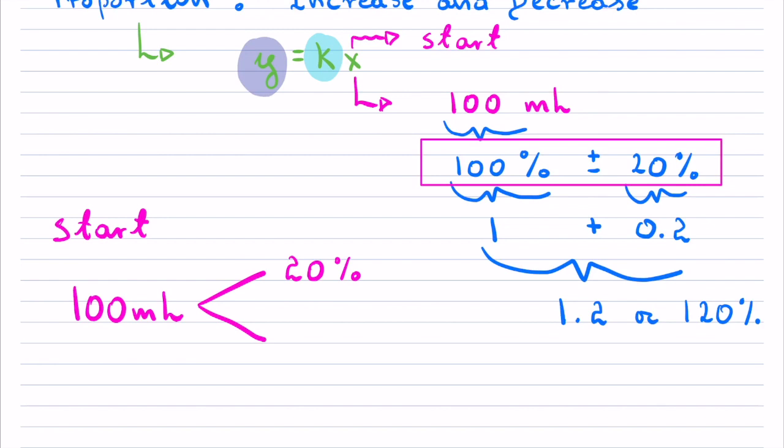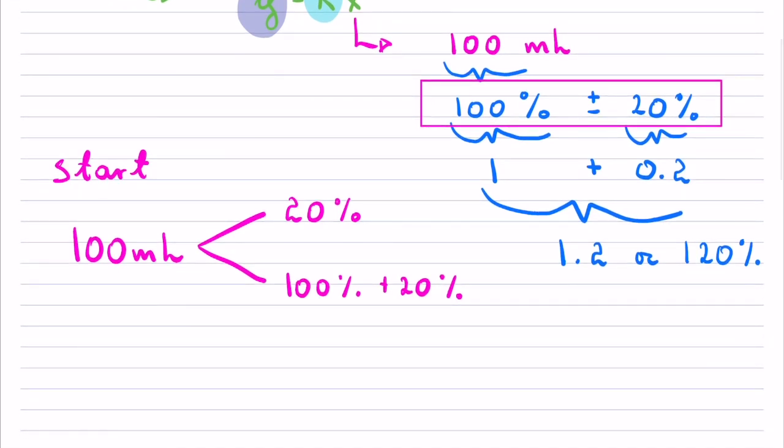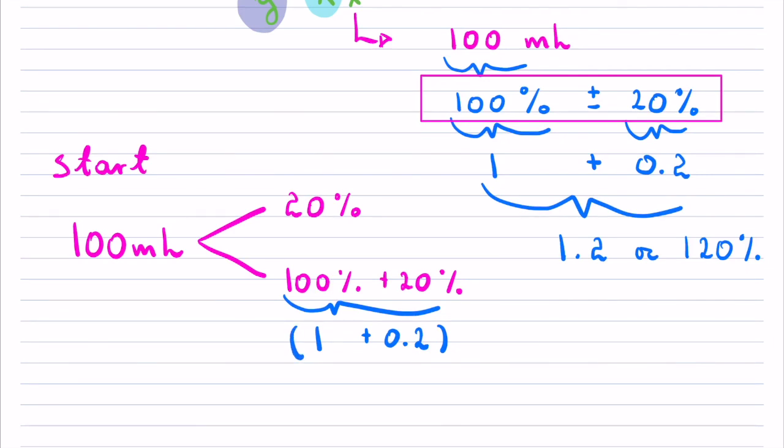Here, what I will do is this is 100% plus 20%. And that would tell me exactly what has happened to that 100 milliliters. If we would input this in, we already said if we change it all back, this is just 1 plus 0.2. I'm going to keep it in brackets here. And this, of course, is just 0.2 right there as decimals.